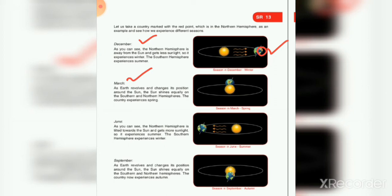As Earth revolves and changes its position around the sun, the sun shines equally on the southern and northern hemisphere. The country experiences spring. As the Earth moves around the sun, its position changes, and both hemispheres receive equal amounts of sunlight, so spring season is experienced here.